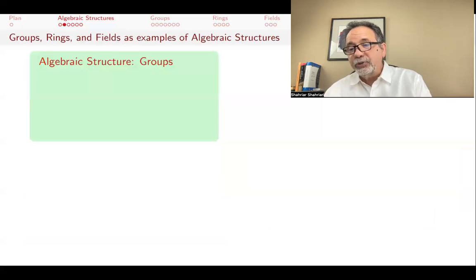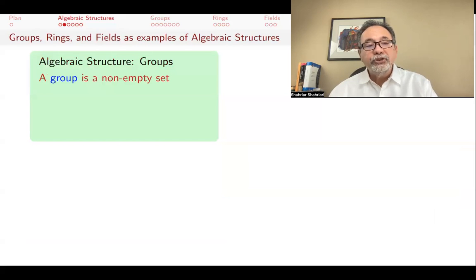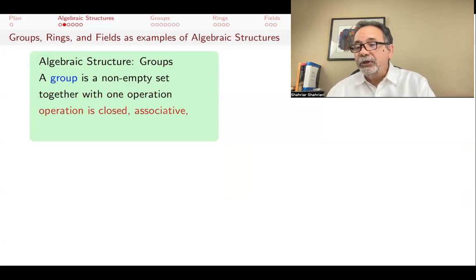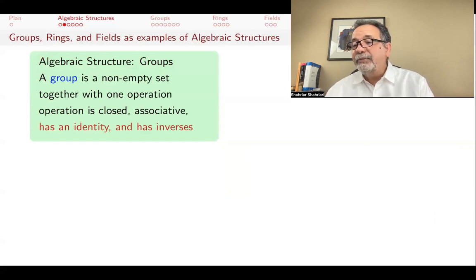A second example of an algebraic structure, and one that we will study in detail in upcoming videos, is groups. A group is just a set together with one operation. And the operation has four properties. It has to be closed. It has to be associative. There is an identity element. And every element has an inverse.